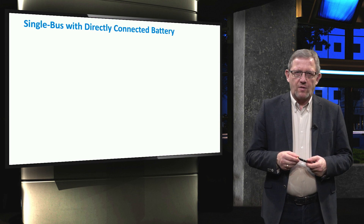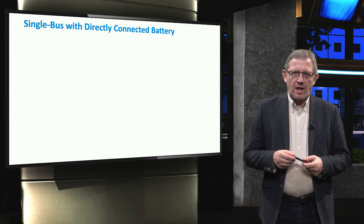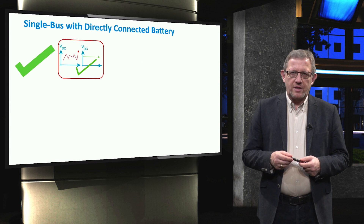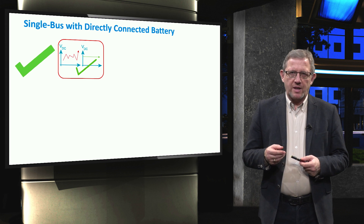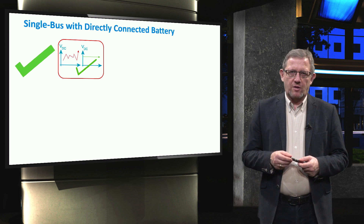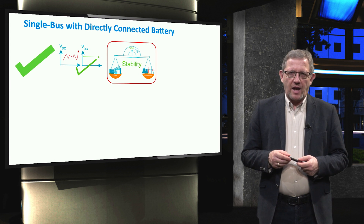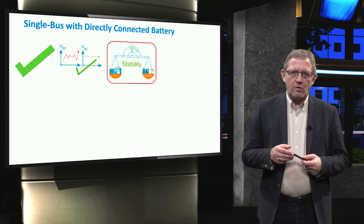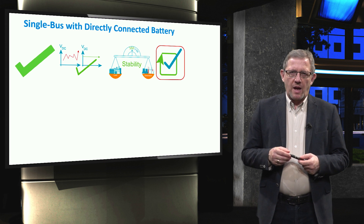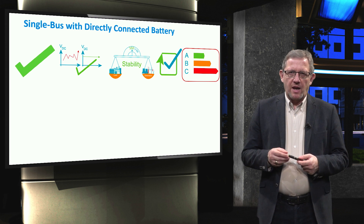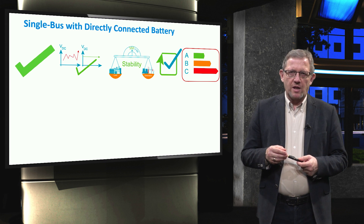The single bus with directly connected battery has a number of advantages. First, due to the direct connection of the battery, the DC link voltage is very stable and regulated because the battery acts as a very large capacitor. This also results in overall higher stability, satisfactorily matching power mismatch between generating units and the loads. The reliability is also increased. Finally, as the battery is directly connected to the DC link without power converters, the overall electrical efficiency is also higher.